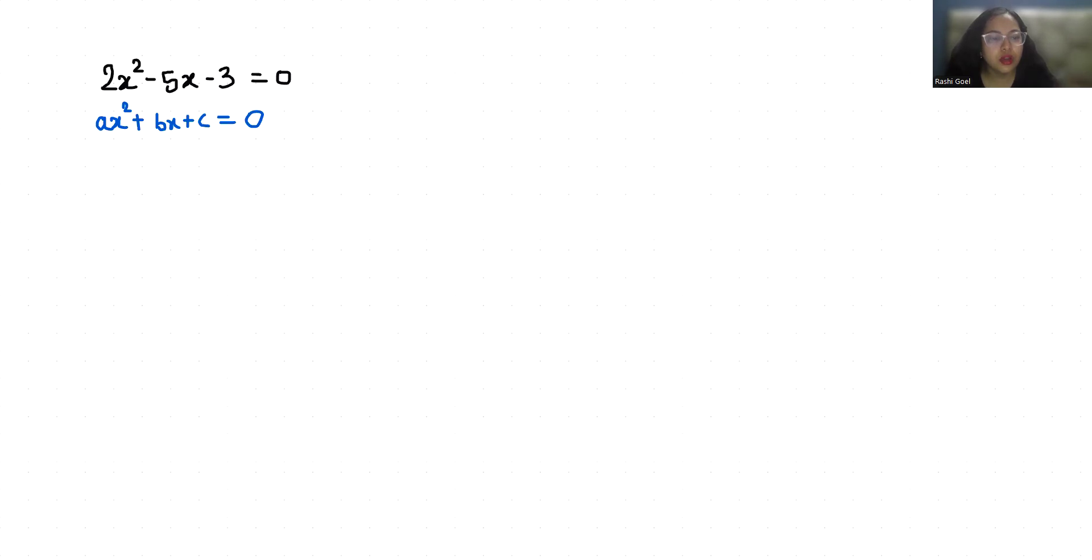Where a is 2, b is -5, and c is -3. To find the discriminant, I am going to use D = b² - 4ac.